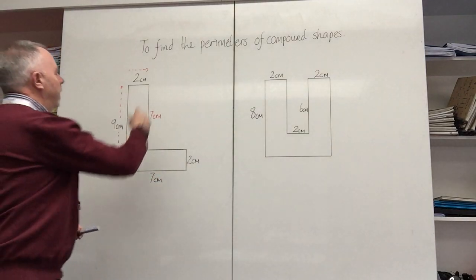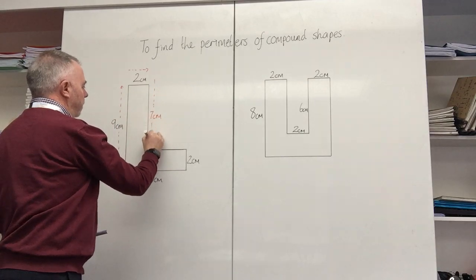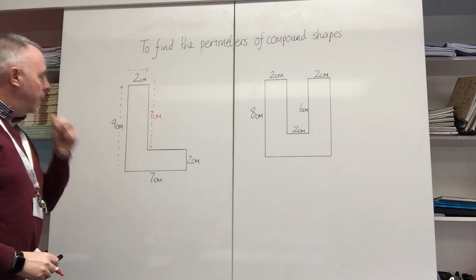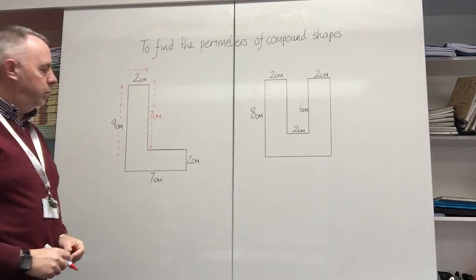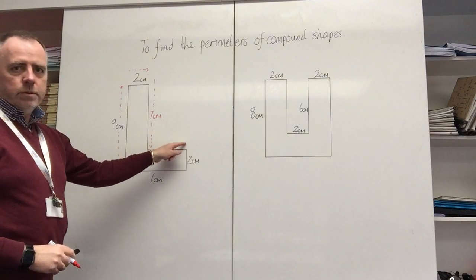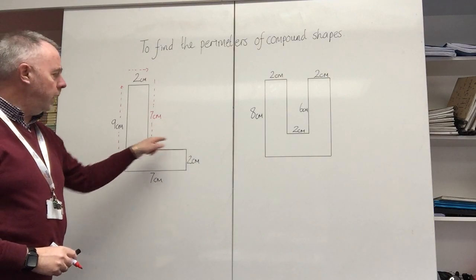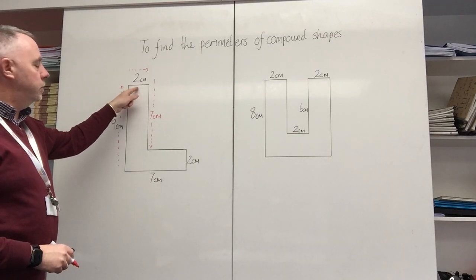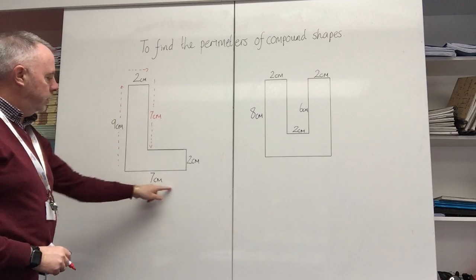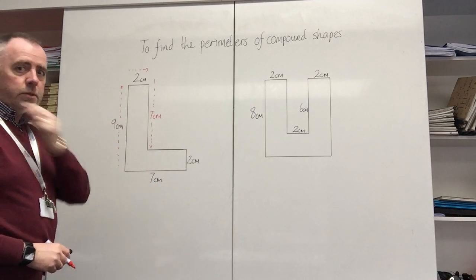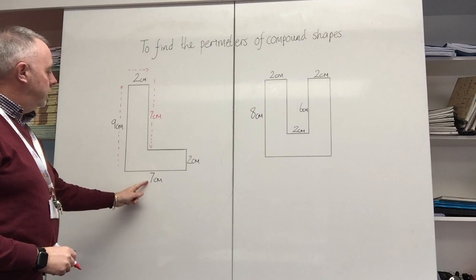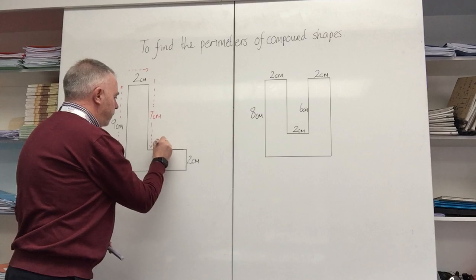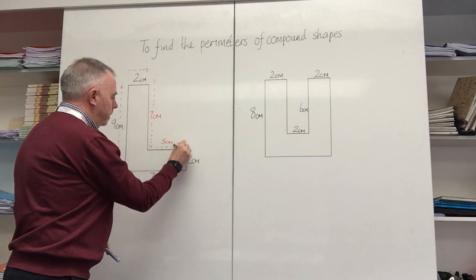So I can now continue my journey around this shape — I've got nine, two, and seven so far. I've also got a problem because I've got this horizontal distance which I haven't got a measurement for, but I do have the top measurement of two centimeters and the bottom measurement of seven centimeters. So seven subtract two gives me five centimeters, which is this distance here.